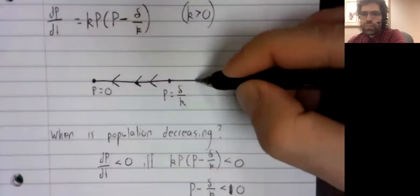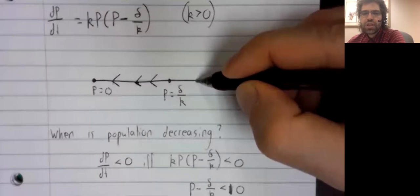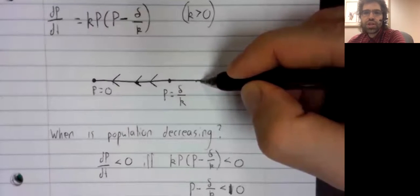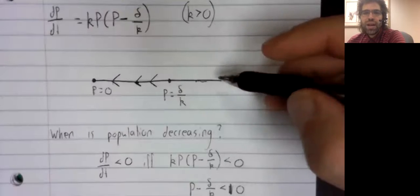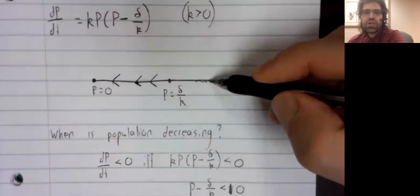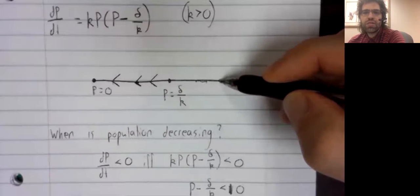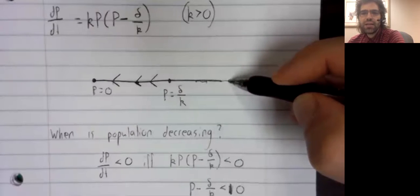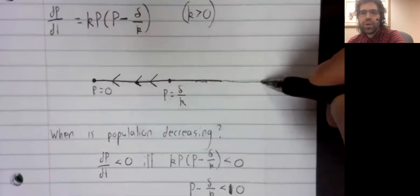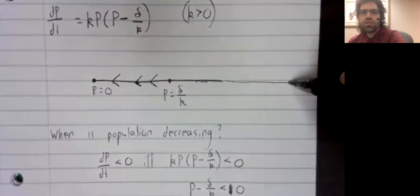So if we have a large initial population, our population grows. And of course, as our population grows, it remains larger than delta divided by k, so it keeps growing.